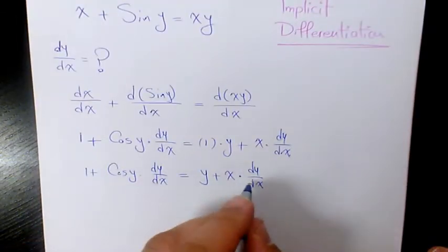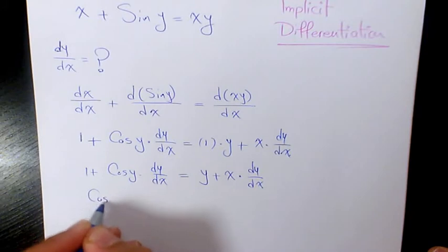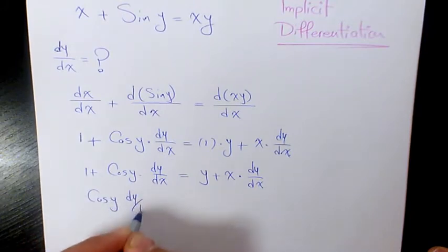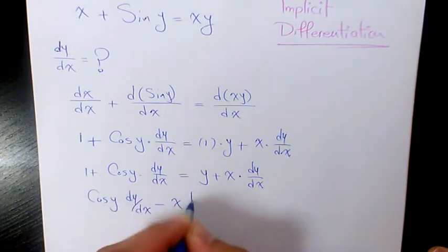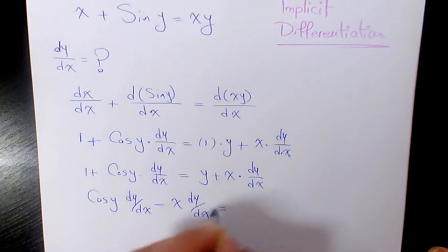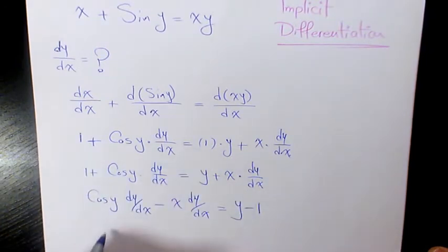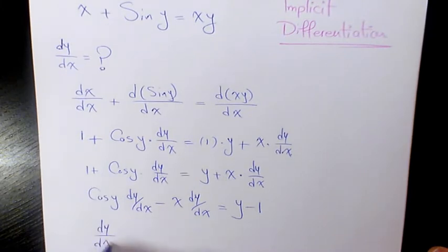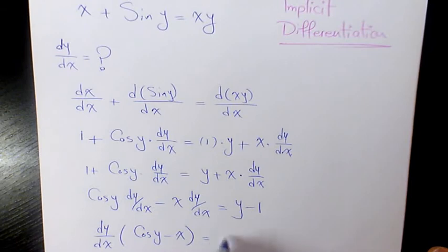Moving terms to one side: cosine y dy/dx minus x dy/dx equals y minus 1. Factoring out dy/dx: dy/dx times (cosine y minus x) equals y minus 1.